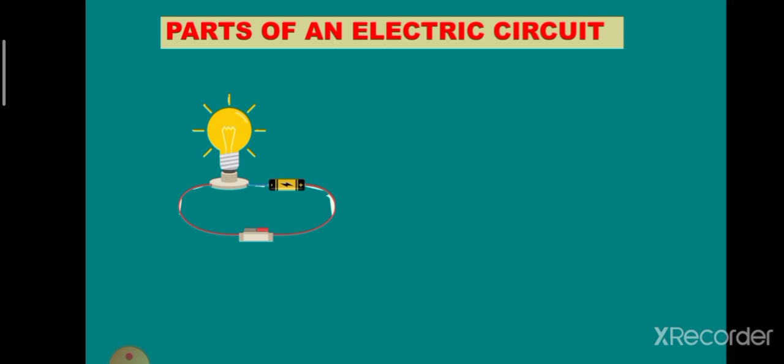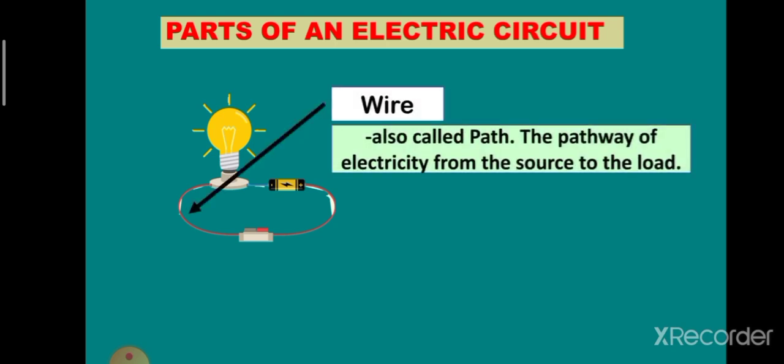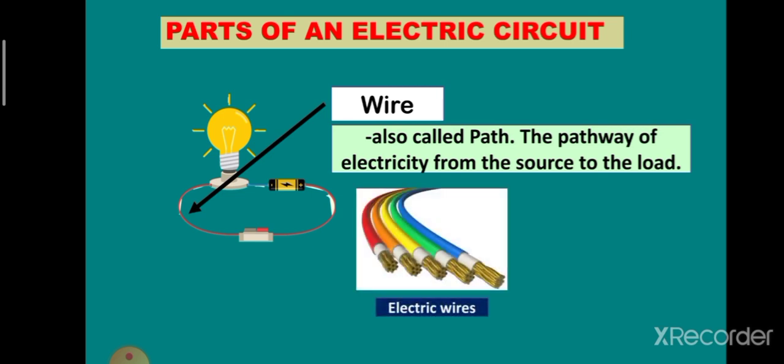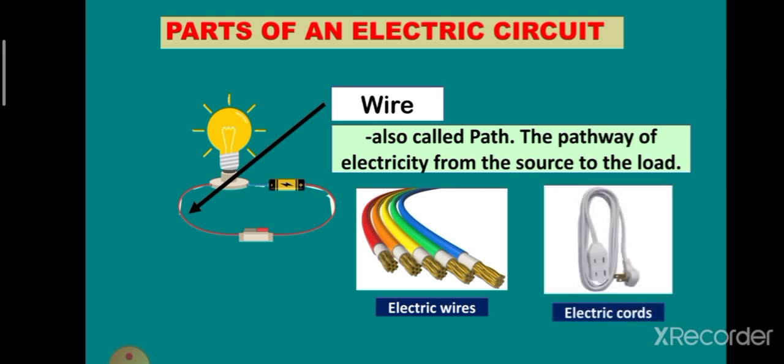The next part is the connecting wire. It is the pathway of electricity from the source to the load. It can be an electrical wire or electrical cords.